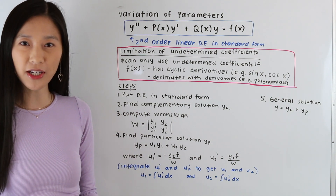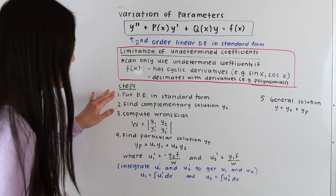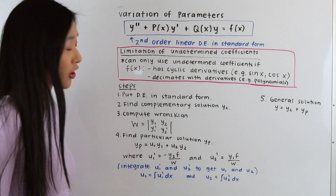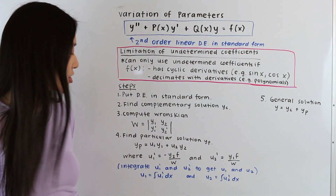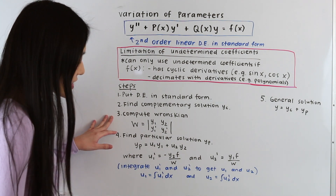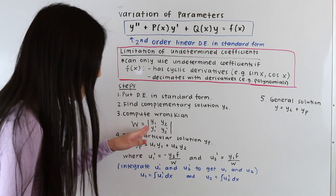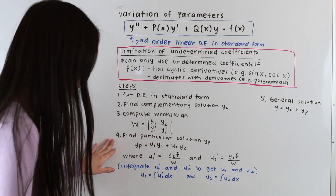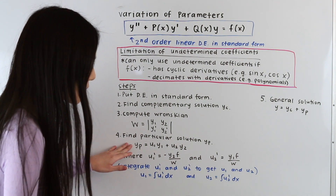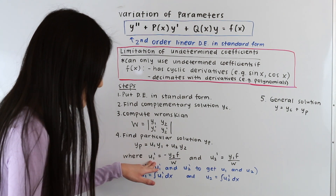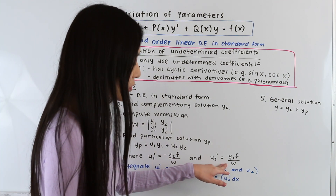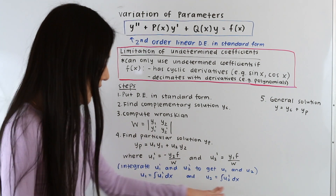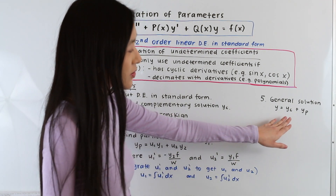Let's go over the steps for solving a differential equation using the method of variation of parameters. Step one: put our differential equation in standard form. Step two: find our complementary solution yc, which is the solution to the homogeneous version of our differential equation. Step three: compute the Wronskian, given by the determinant with y1 and y1-prime in the first column and y2 and y2-prime in the second column. Step four: find our particular solution yp = u1*y1 + u2*y2, where u1-prime = -y2*f / W and u2-prime = y1*f / W. Integrate u1-prime and u2-prime to get u1 and u2. Finally, add yc and yp to get the general solution.